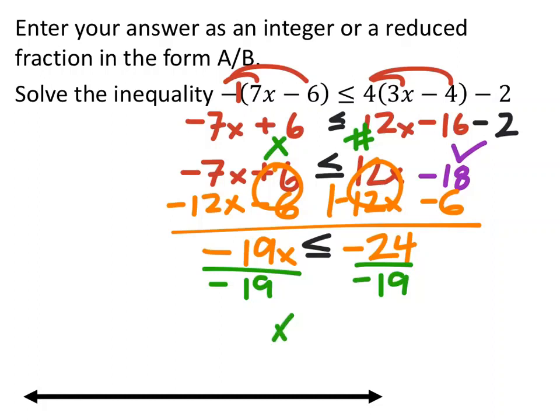So then x, and yeah, because that's a negative, we just divided both sides by -19. That's going to flip this inequality, so now it's x is greater than or equal to 24/19.